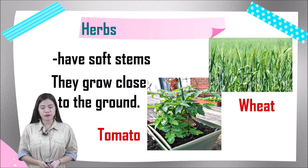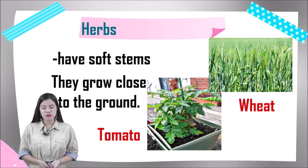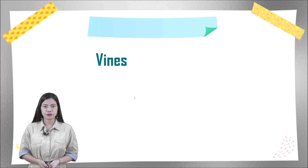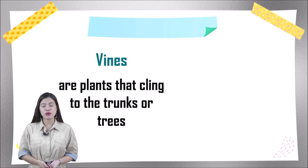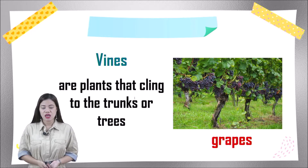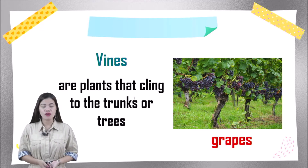Herbs contain enough nutritional benefits including vitamins and minerals to make them part of a healthy, balanced diet. Next, we have vines. Vines are plants that cling to the trunks of trees. Examples are grapes. Vines grow by crawling around a piece of wood.